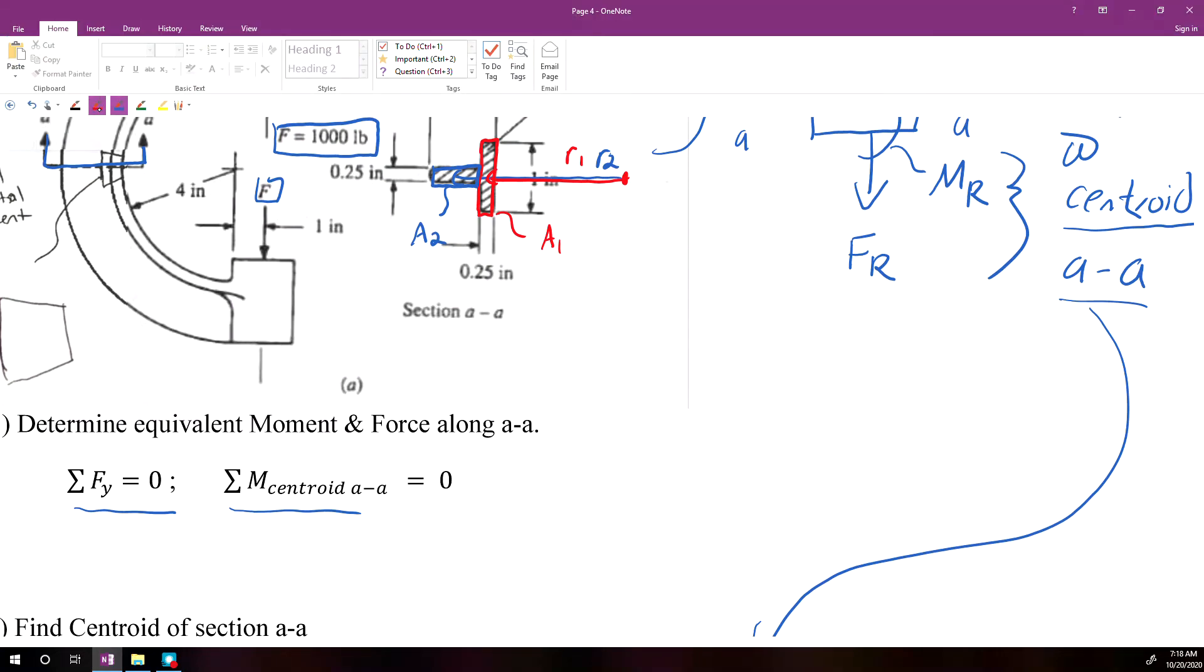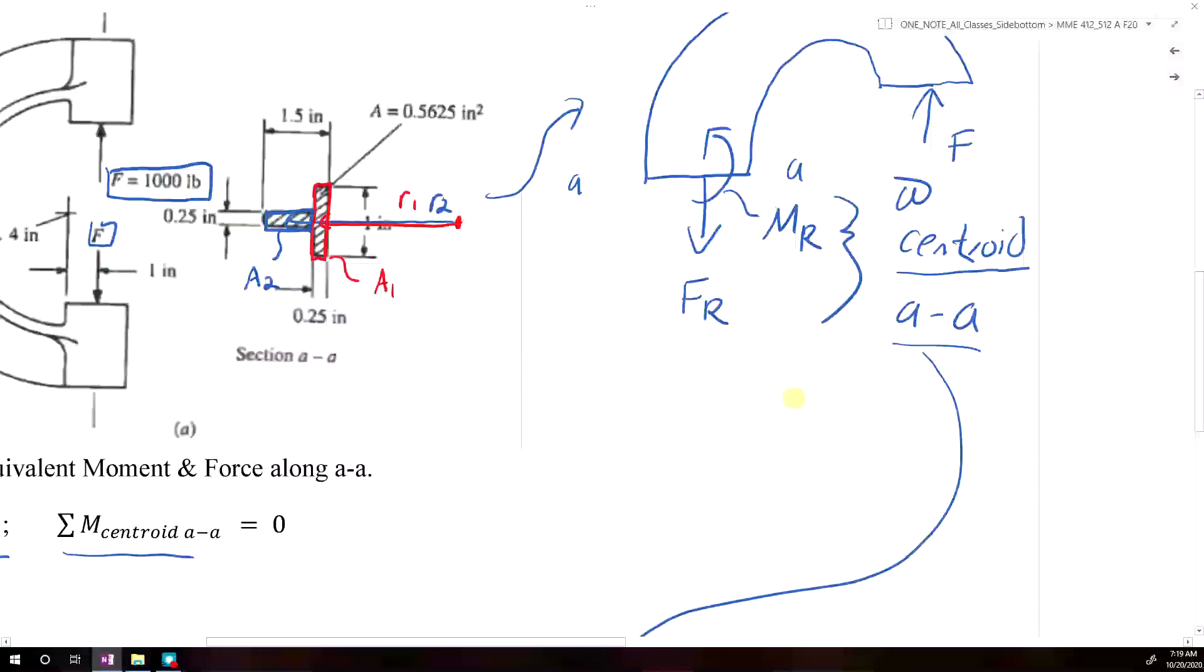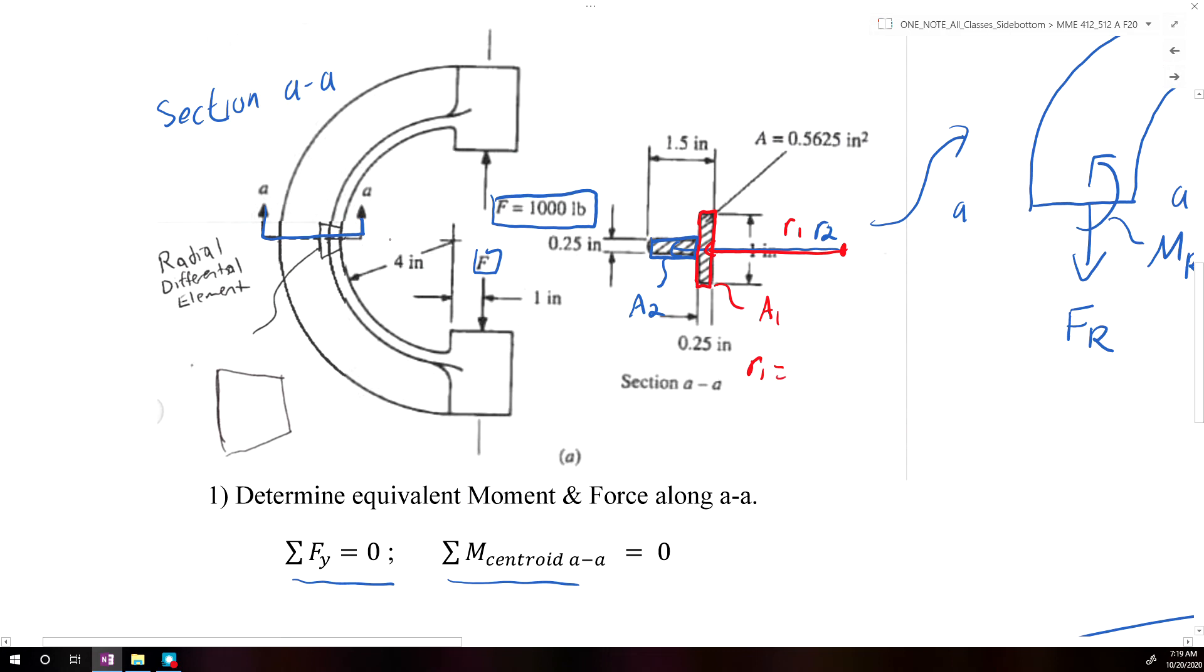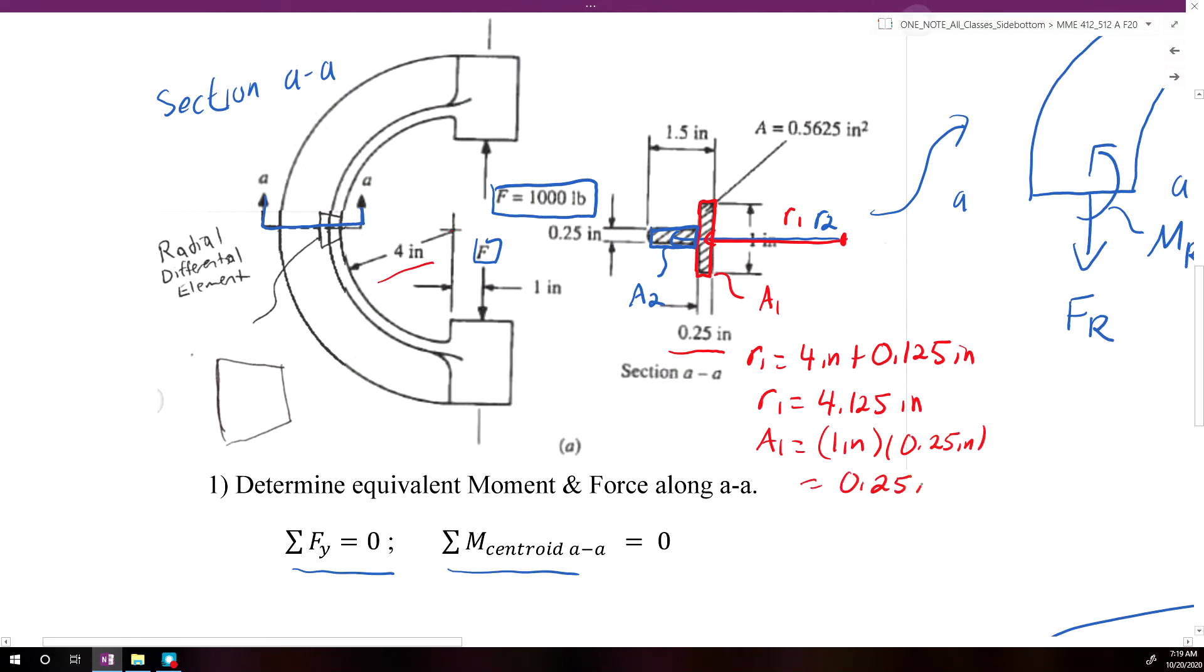So R1 is going to be equal to the inner radius, which was given to us as 4 inches, plus half of this thickness, so plus half of a quarter of an inch, which would be 0.125 inches. So R1 would be equal to 4.125 inches. A1 would be equal to the width of the section, which is 1 inch, times the thickness of the section, which would be 0.25 inches. So it would give us a quarter inch squared for A1.